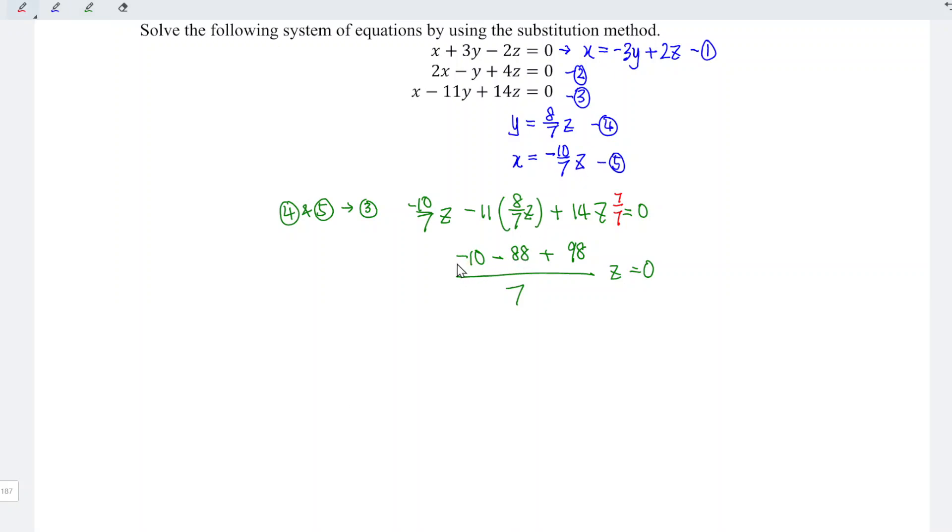We have minus 10 minus 88 which is minus 98. 98 plus 98 offset and no more, so we have 0 divided by 7 which is 0. 0 times anything we get back 0, and this implies that we have 0 equal to 0.